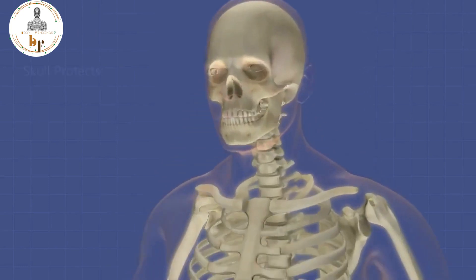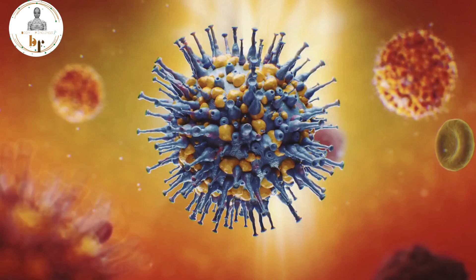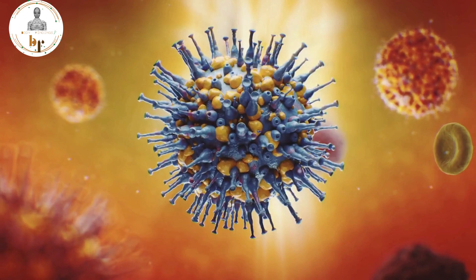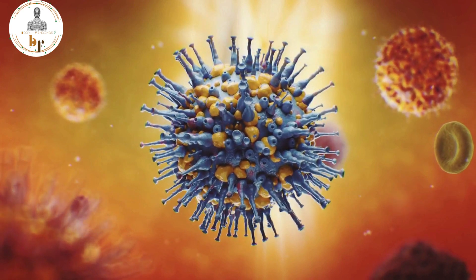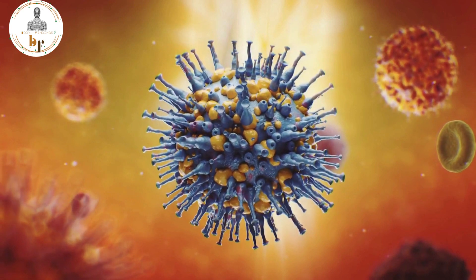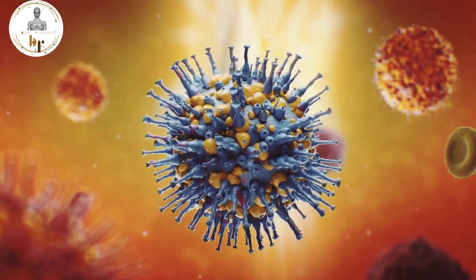The human body consists of a body of systems, groups of organs that work together to sustain life. It is bound to weaken with time, but the most prevalent diseases that cause the death of the human body are going to be discussed in this video.